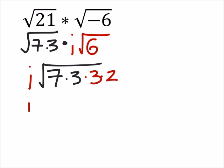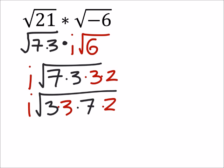Now we could rearrange this so that we have the square root of 3 times 3 times 7 times 2. And see there we got a pair of 3s, so I've got i times 3 times the square root of 14.